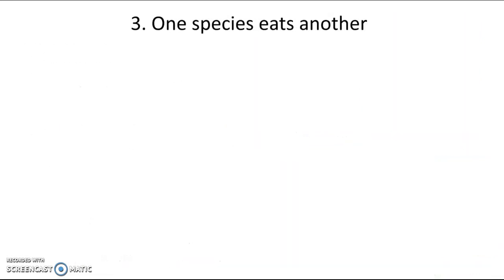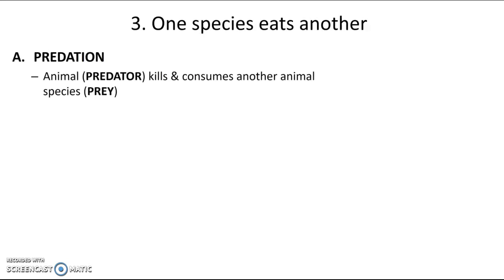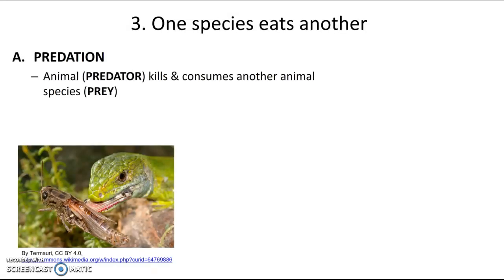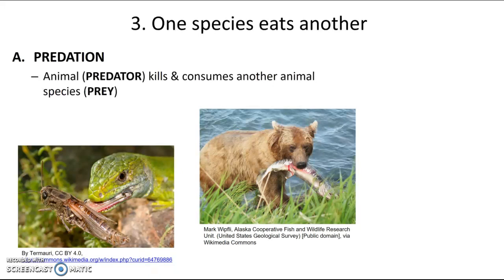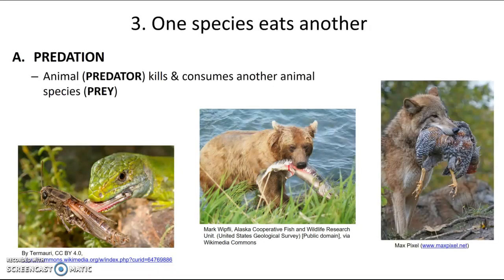The last type of interspecific interaction is when one species eats another. The first subtype is predation, in which an animal predator kills and consumes another animal species known as the prey. Examples include a lizard eating a grasshopper, a bear eating a fish, and a wolf eating a bird. This is classified as plus-minus — good for the predator who gets food, but not good for the prey. Many adaptations evolve as a result: predators have adaptations to help them catch and kill prey, while prey have adaptations to help them hide, protect themselves, or escape.